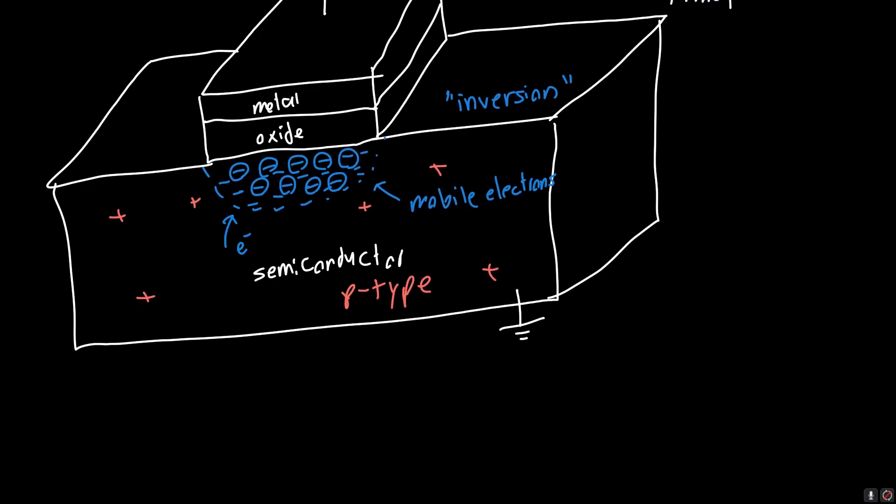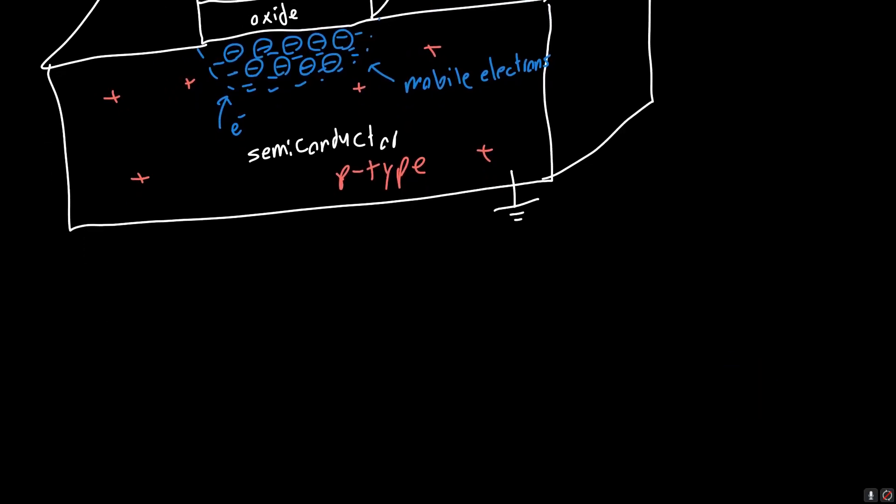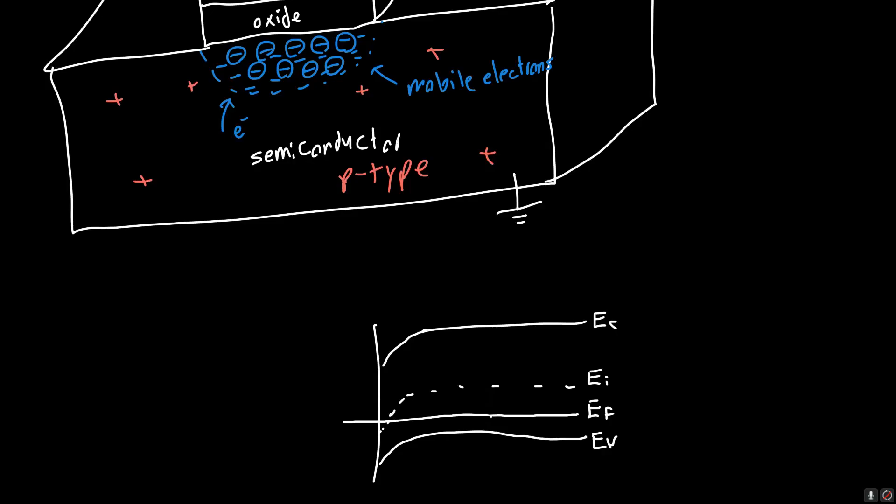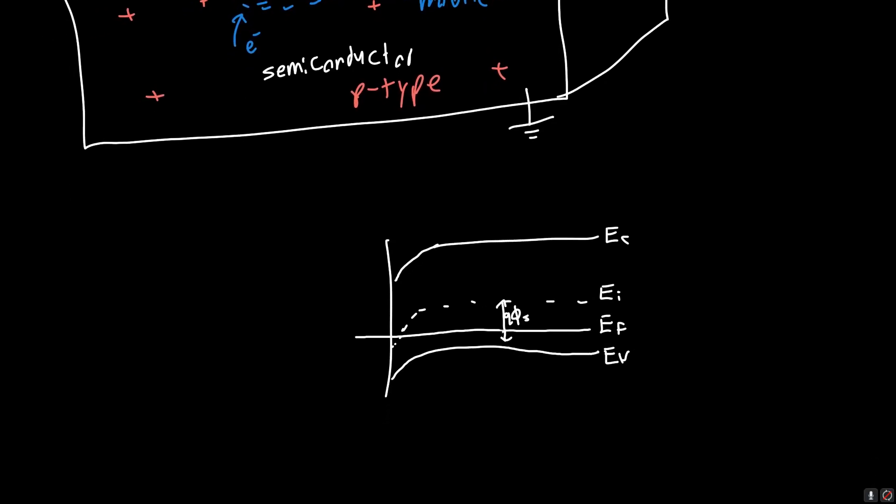Well, from the last video, remember that the central quantity that determines whether or not we have inversion, if we just take a look at the semiconductor's band diagram, the central quantity that determines whether or not we have inversion was this surface potential, PHI_S. Or if we want to be precise, it's Q times PHI_S, because PHI_S is a voltage, Q times PHI_S is an energy. And we said that when we get...